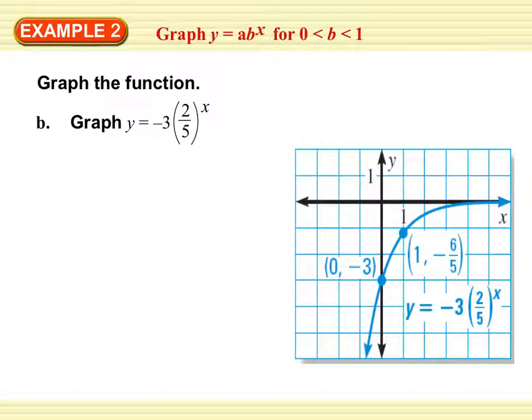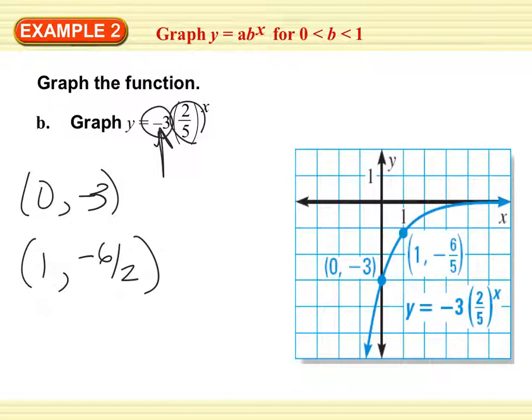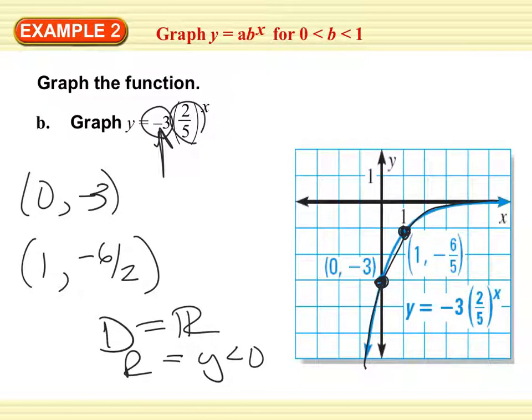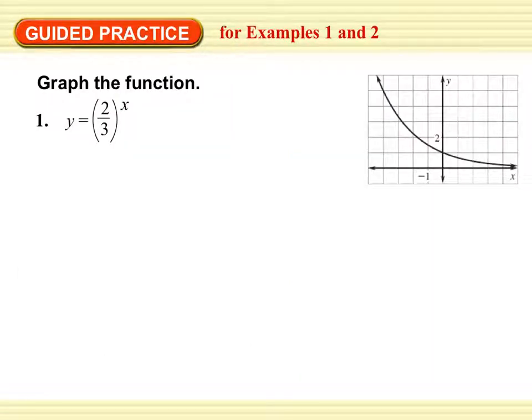Alright. So let's try one. Remember, when we plot this, we're going to plot 0, a. And then 0, it's actually a times b. So 0, a is 0, 2. And a times b is 2 times 1 fourth, which is 1 half. So 1 comma 1 half. And that's what we graph right here. And it's a decay. So we're going down from left to right.